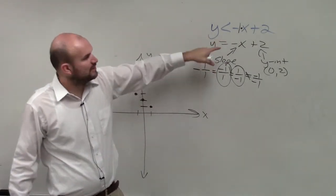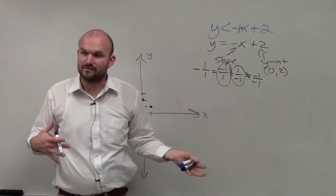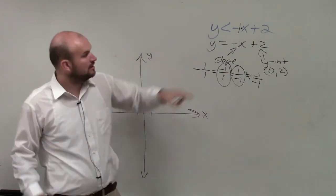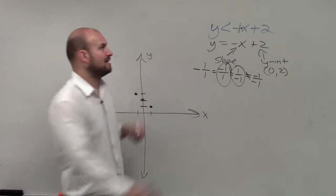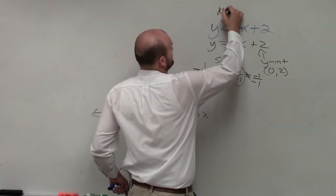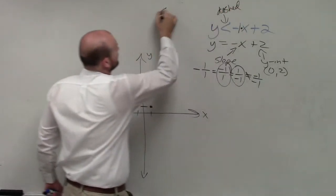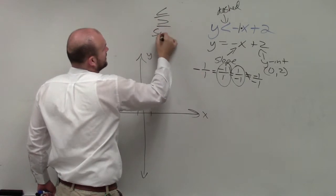But before we start graphing, we need to determine are the points on the line a part of the solution or not a part of the solution? So we look at our inequality symbol. And whenever it's less than or greater than, it's going to be dashed. Less than or equal to, greater than or equal to, it's solid.